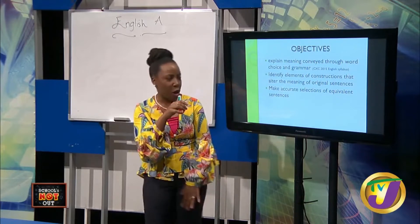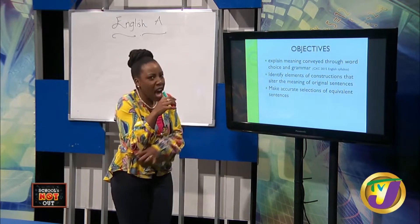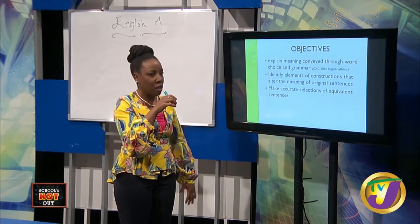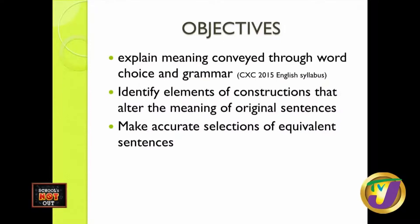You don't know it's Mrs. Reed Virtue on TVJ, Schools Not Out. The first objective is: explain meaning conveyed through word choice and grammar — get that from the CSEC syllabus. The second objective is: identify elements of constructions that alter the meaning of the original sentence. Third objective: make accurate selections of equivalent sentences.